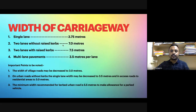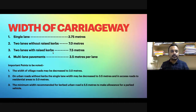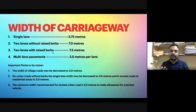For two lanes without raised curbs, the width is three point five multiplied by two, which is seven meters. Raised curbs are extra paved portions beyond the carriageway used as footpaths or vehicle parking. With curbs, the width should be seven point five meters; without curbs it can be seven meters. Curbs are provided mainly on urban roads where traffic is more, such as areas where vehicles park on the roadside.